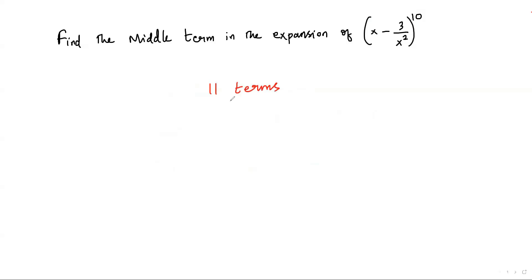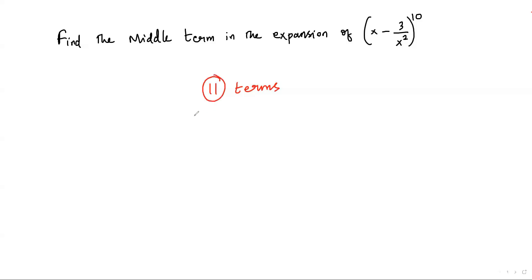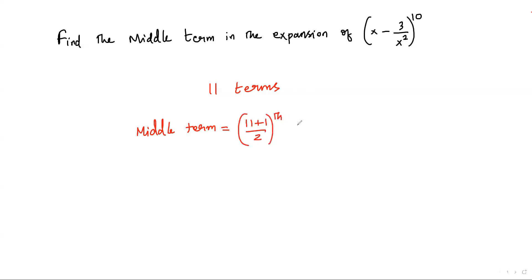Now we have to find the middle term among these 11 terms. To find the middle term we add 1 to 11 and divide by 2: (11 + 1)/2 = 12/2 = 6. So the middle term is the 6th term.